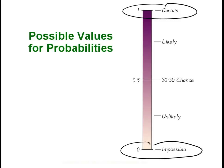Everything else is somewhere in between. In the natural world, most things tend to oscillate around 50% because there seem to be two sides to every story — there is birth and death, growth and decay, kind of the yin and yang of things.